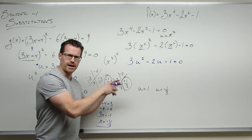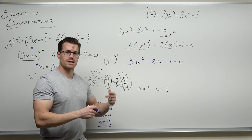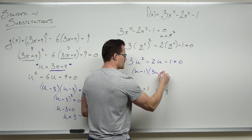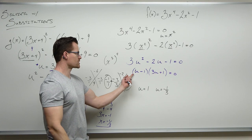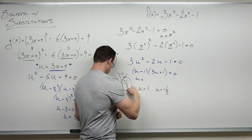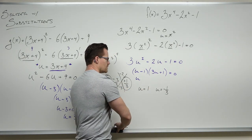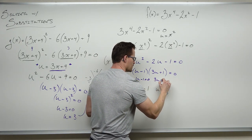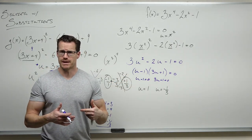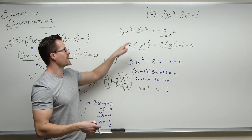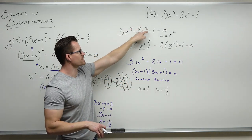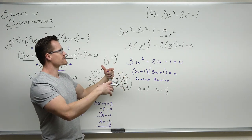We can write out (u−1)(3u+1) equals zero to show our work. Setting each equal to zero and solving: u equals 1 and u equals negative one-third. Now we've got to get back to x. Since u equals x squared, we substitute back: x squared equals 1, and x squared equals negative one-third. Then we use other techniques we've already learned — the square root method.